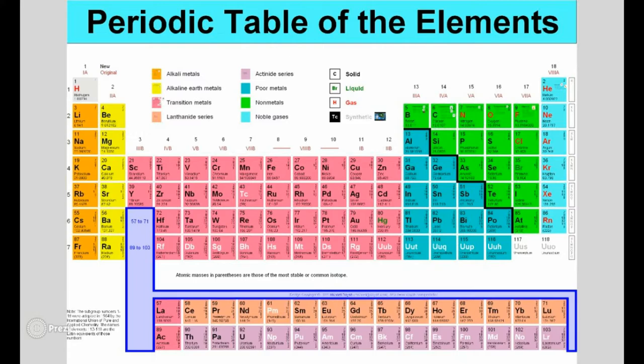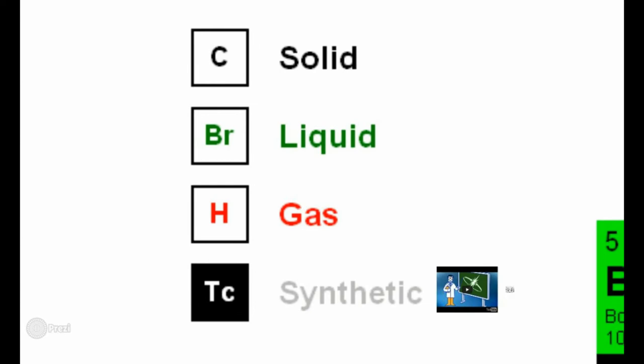Basically, if elements are below the stair-step line, we consider them mostly metal and call them poor metals. If above the line, mostly non-metal. If they touch the line, they're a metalloid. Remember about solid, liquid, gas — if you ever need to figure out what state of matter they're in, it's on the periodic table. There are only two liquids, and the gases are self-explanatory — look at noble gases. That's why they're called noble gases: they're all gases.